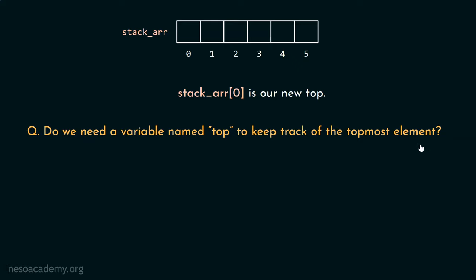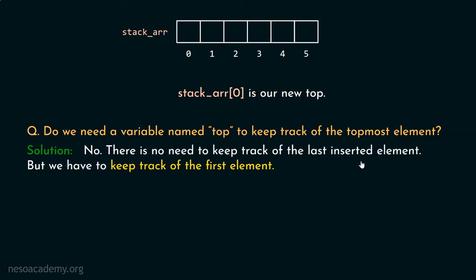Think about it. Stack ARR zero will be our new top and that will not change — this position is fixed. Our new topmost element will always be placed at this position. Therefore, in my opinion, there is no need to keep a top variable, because we already know the index of the topmost element — it will always be zero. There is no need to keep track of the last inserted element, but we have to keep track of the first inserted element.